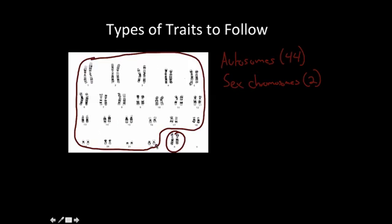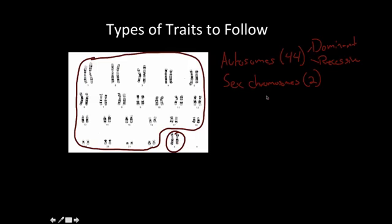The first 44 are autosomes, and we have the two sex chromosomes. 44 plus 2 adds up to 46. When we're talking about following traits in a pedigree chart, there are autosomal dominant traits to follow, autosomal recessive traits, and we can also follow X-linked disorders through a family.